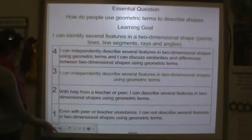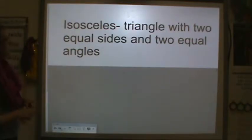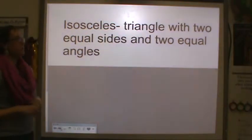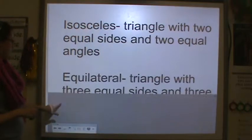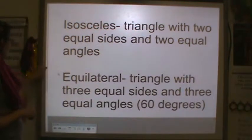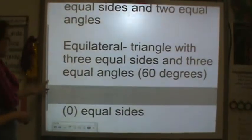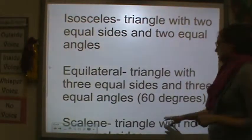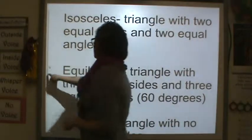So go ahead and rate yourself and circle at the beginning of our lesson. Let's talk about our types of triangles. We have an isosceles triangle - it's a triangle with two equal sides and two equal angles. An equilateral is a triangle with three equal sides and three equal angles. Those angles are always 60 degrees.